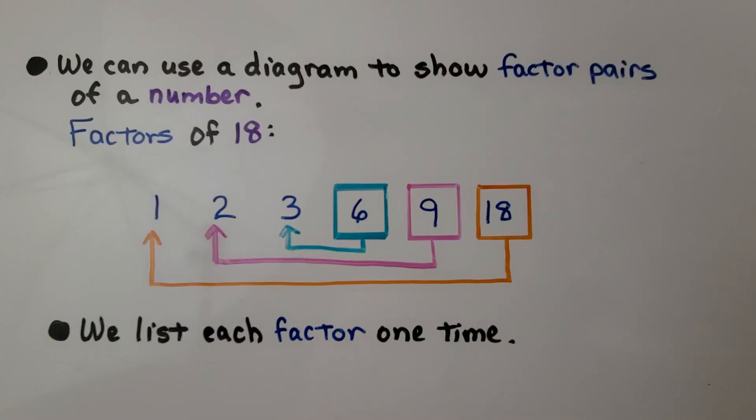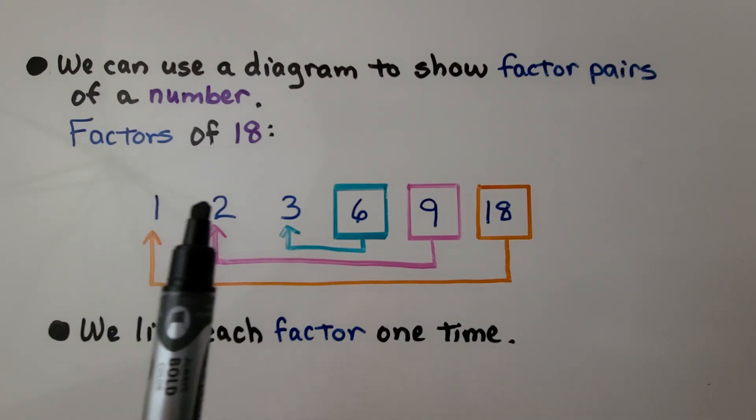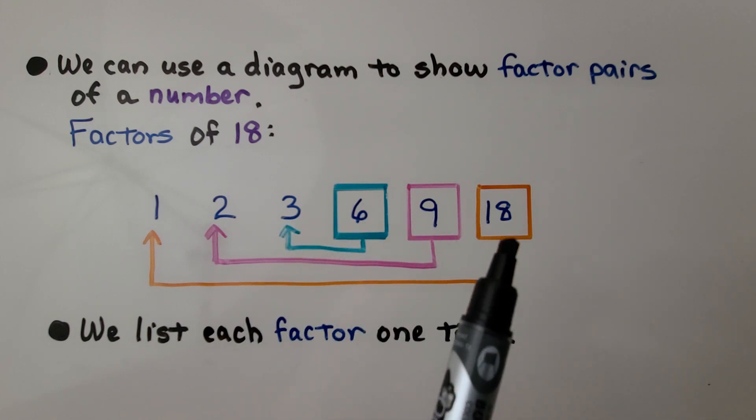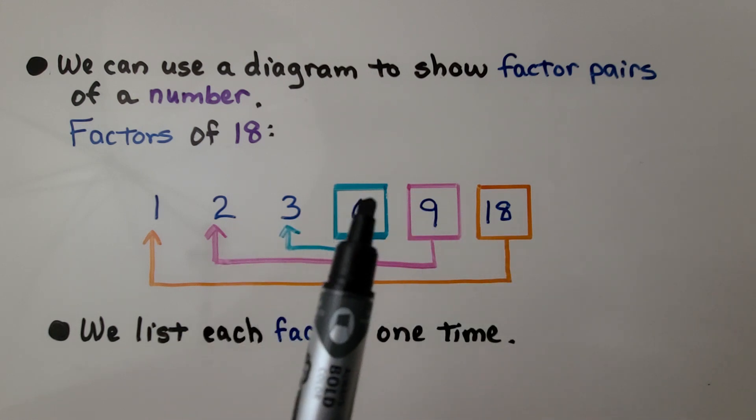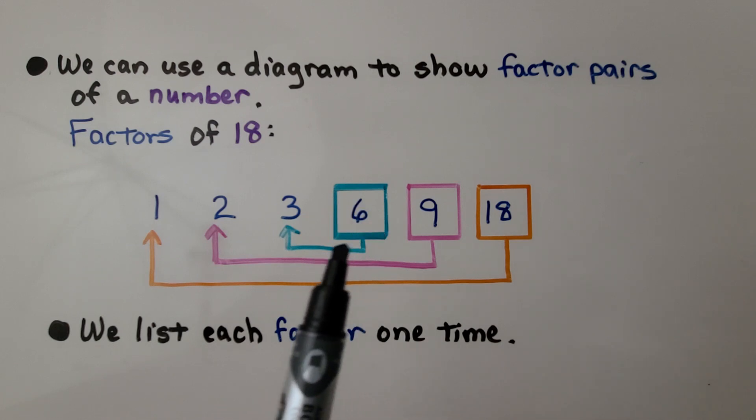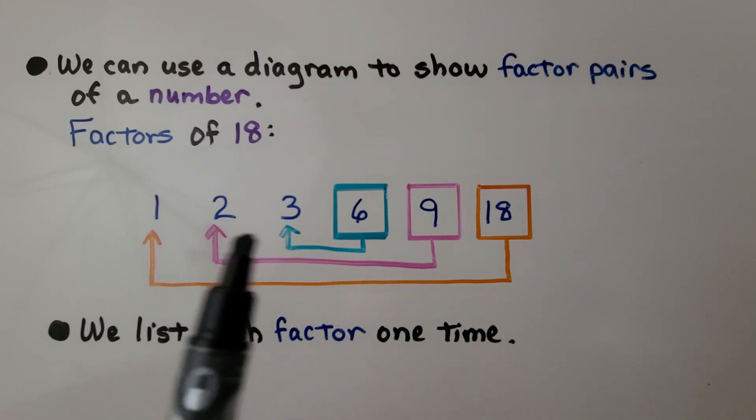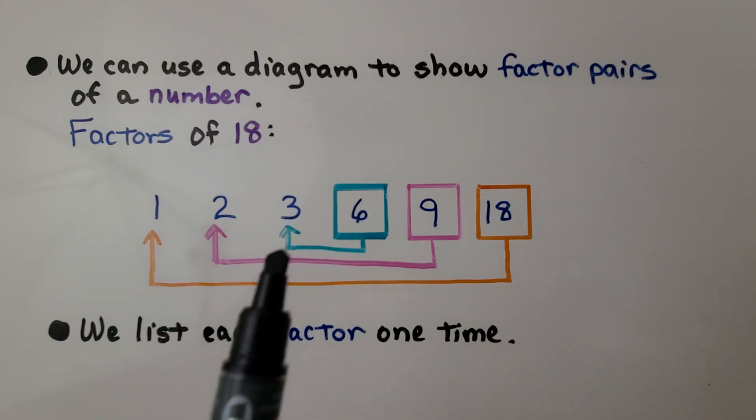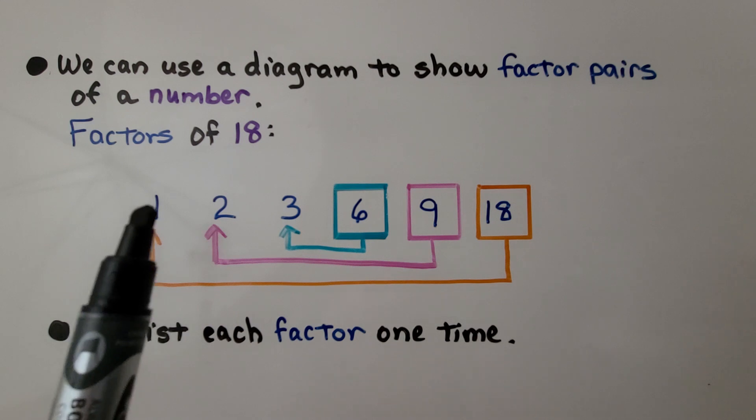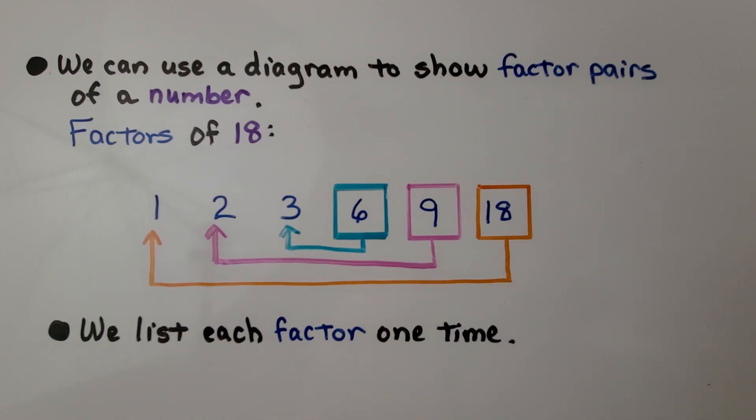We can use a diagram to show factor pairs of a number. The factors of 18, we have them listed 1, 2, 3, 6, 9 and 18. And we can put a box around some of them and match them with an arrow to show that we would multiply 3 times 6 or 2 times 9 or 1 times 18. We list each factor one time.